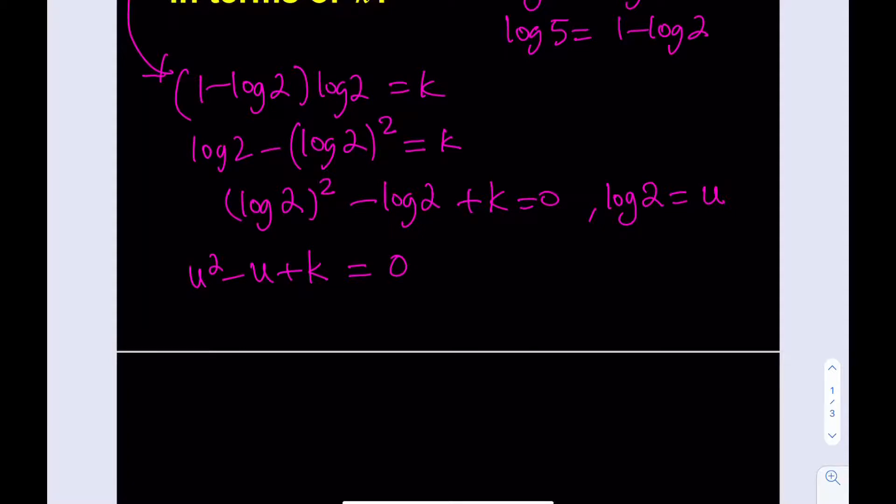We expect two different solutions. But if log 2 is one of the solutions, what's the other solution? The answer is log 5. Why? Because if you look at this as a quadratic equation, it has two roots. Let's say those roots are u1 and u2. From Vieta's formulas,